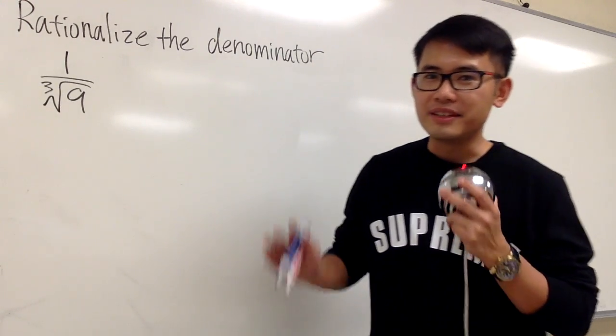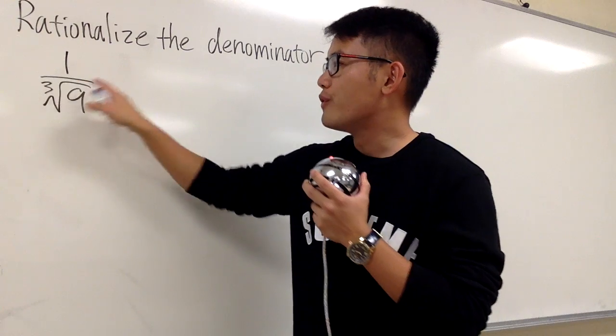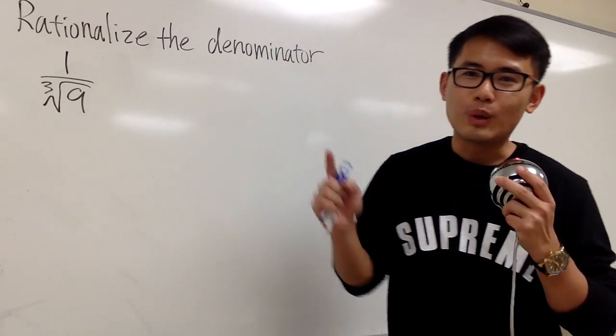This time, we are going to rationalize the denominator with the cube root in the denominator, 1 over cube root of 9. So how can we do that?